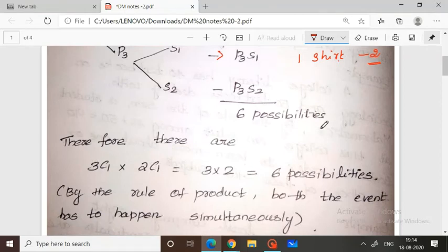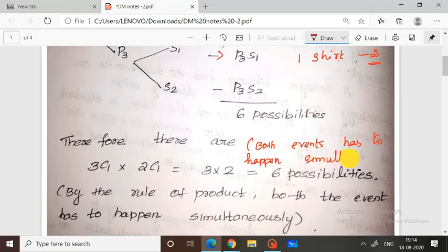For the rule of product, both events have to happen simultaneously. That is the condition - both events must occur simultaneously.